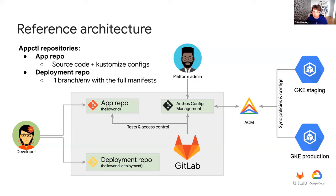With AppCTL, you have one application repository — that's one you already have today where your source code lives, your Python, Golang, Java, whatever. And you have another repository called the deployment repository, where all your Kubernetes configurations for that application are going to live. AppCTL makes the link between those two repositories, builds those Kubernetes configurations, and helps you apply those configurations in a very controlled way on your Kubernetes clusters. Because we're talking so much Git, GitLab is at the core of everything — used to control access to those repositories, implement approval workflows, and run test builds.